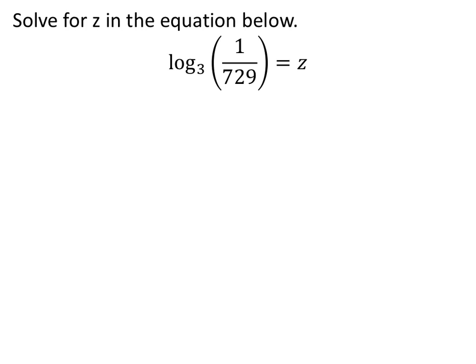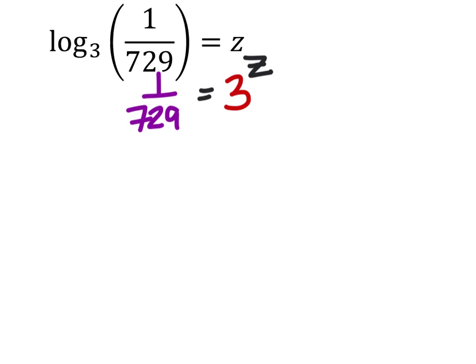But for now let's go ahead and do this the way that we've learned already and that is by changing this to an exponential form. So I have 1 over 729 equals 3^z but I need that 729 not in a fraction so I'm just going to make it a negative exponent.